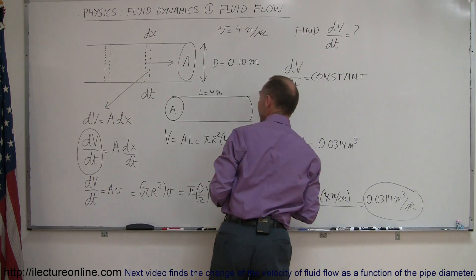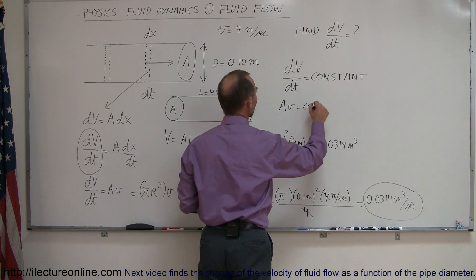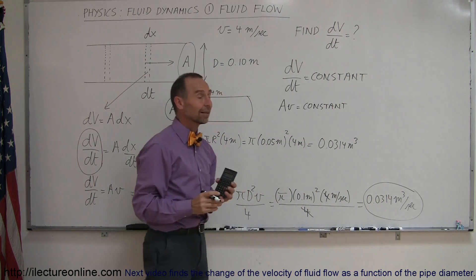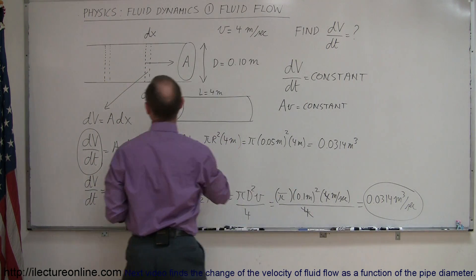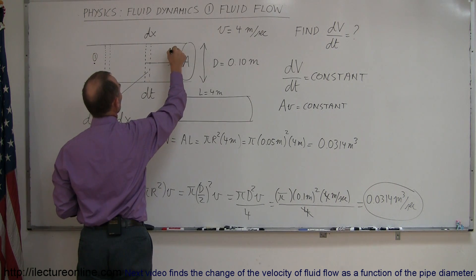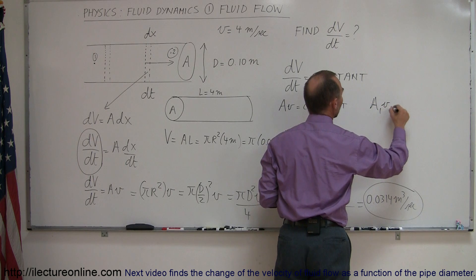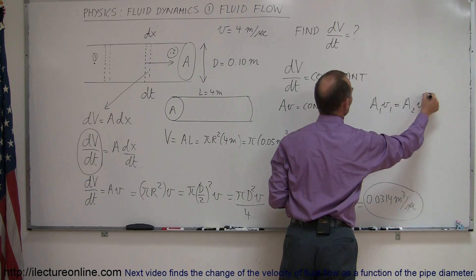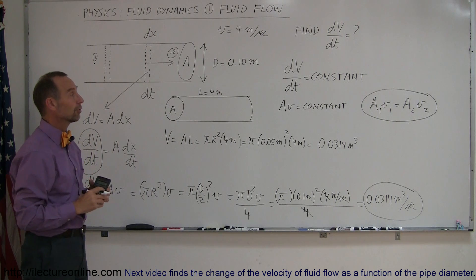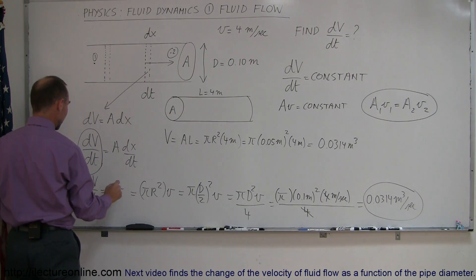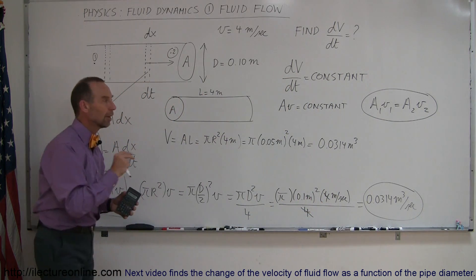Since dV/dt is constant, the product A·v must also be constant everywhere along the pipe. So if we pick any two points — point 1 and point 2 — we know that A₁·v₁ must equal A₂·v₂. This equation will help us solve fluid flow problems. The key takeaways are: dV/dt = A·v, and A₁·v₁ = A₂·v₂.